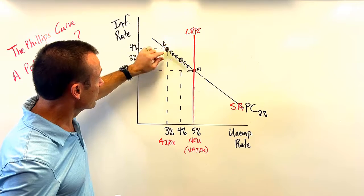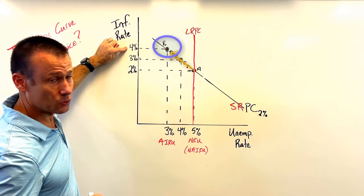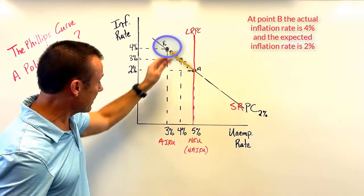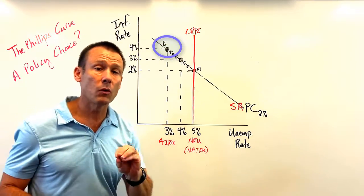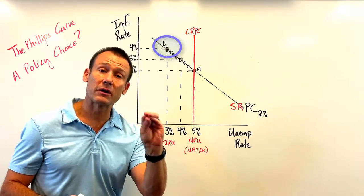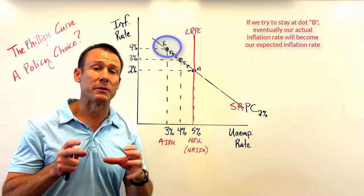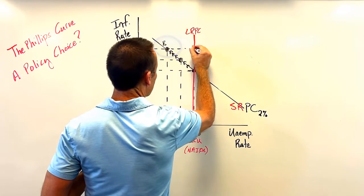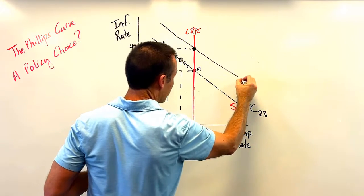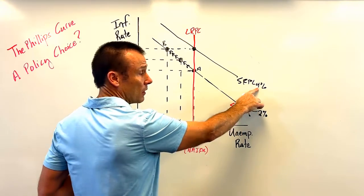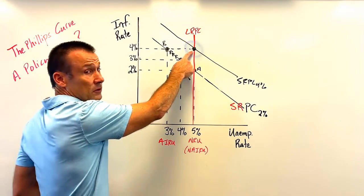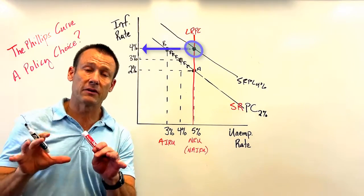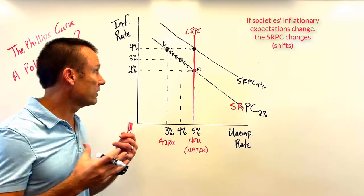With expansionary monetary policy, we've driven the economy to point B. The problem: our expected inflation rate is still 2% as long as we're on this curve, but our actual inflation rate is 4%. If we try to keep ourselves at 3% unemployment, eventually what we are experiencing — the actual inflation rate — will become what we expect. The moment it becomes what we expect, we get a new SRPC with an expected inflation rate of 4%.